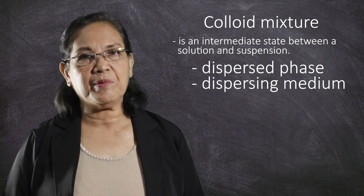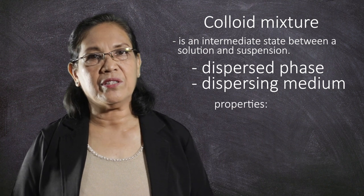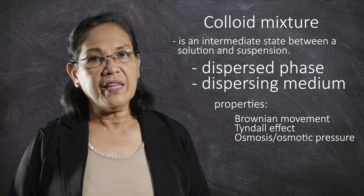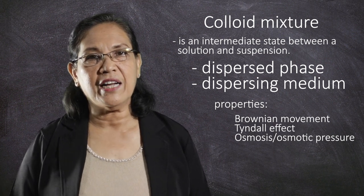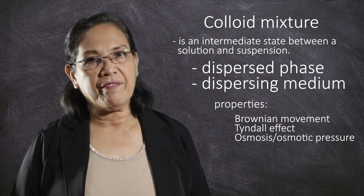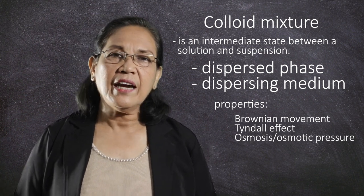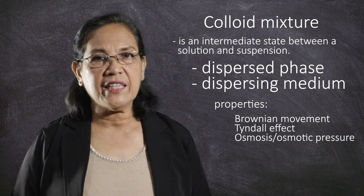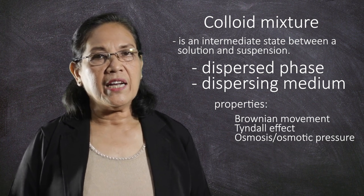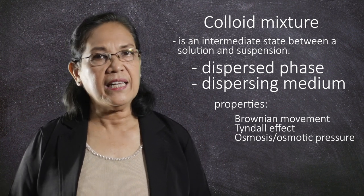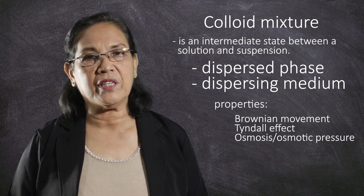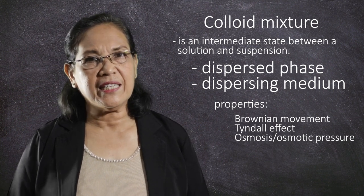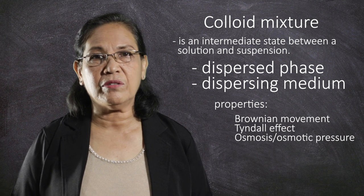There are properties possessed by the colloid. The first property is the Brownian movement, otherwise known as the motion effect. This means that the tiny particles in a colloidal system have no tendency to settle down; they keep on moving in a zigzag random motion. This motion effect stabilizes the substance or mixture called a colloid.